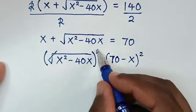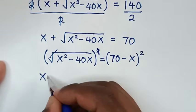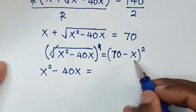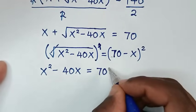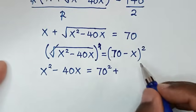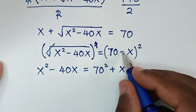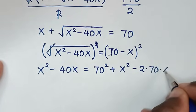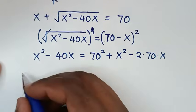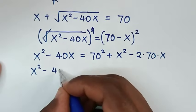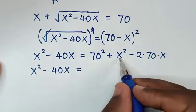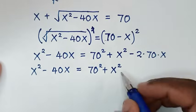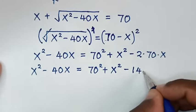To remove the square root, we square both sides. The square root cancels with the square, giving x squared minus 40x on the left. The right side is (70 minus x) squared, which expands to 70 squared plus x squared minus 2 times 70 times x, which is x squared minus 140x plus 4900.